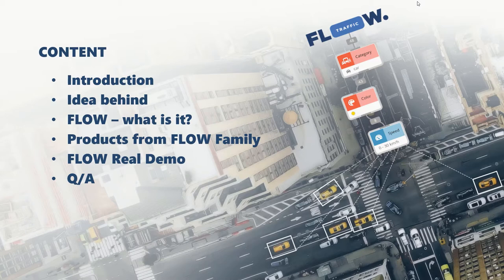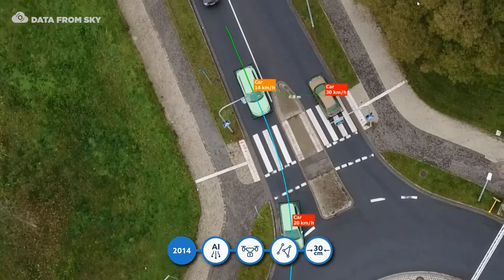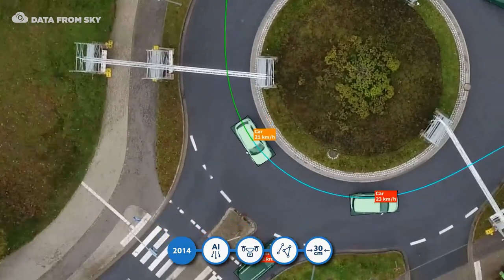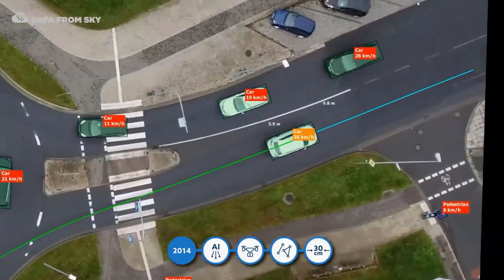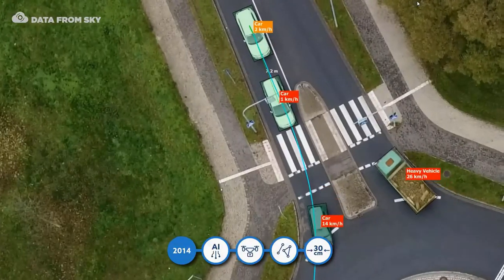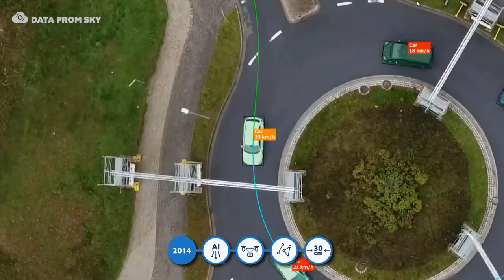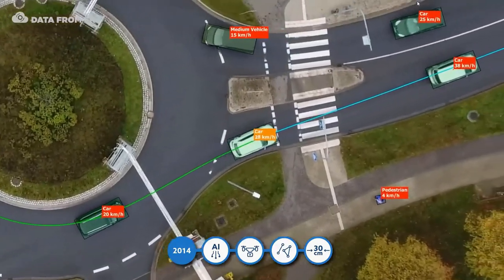You are free to ask questions anytime during the course of the webinar through the chat box, and we will answer them at the end of the presentation. But first things first — before we get directly into Flow, let me share with you how our journey in traffic analytics began. Our journey started in 2014, when our brand Data from Sky was born from the results of a research project. Back then it was an engine combining artificial intelligence, video from drones, and a trajectory-based approach. And soon, Data from Sky became a so-called game changer — we came with the idea of using drones for traffic surveys instead of manual counts.